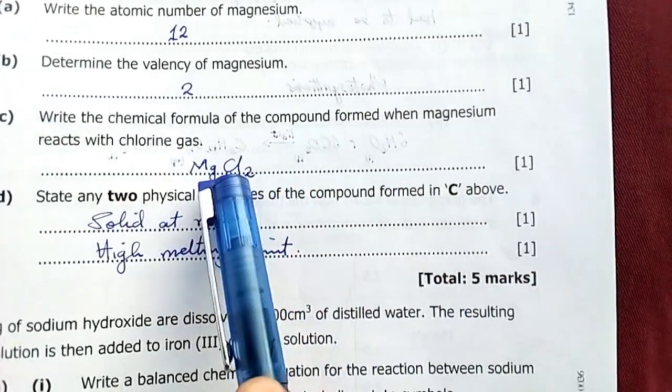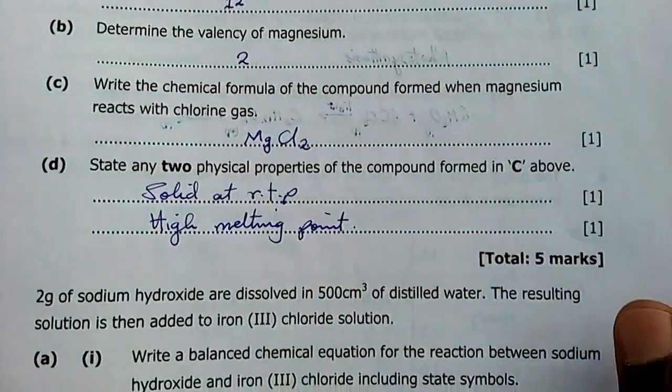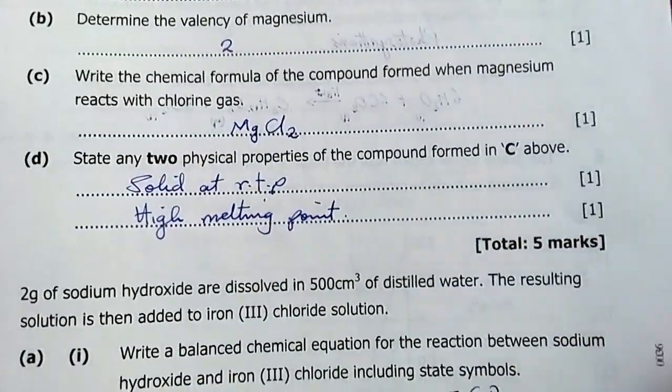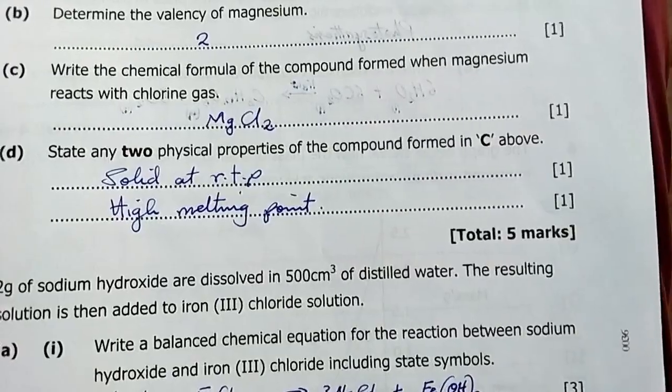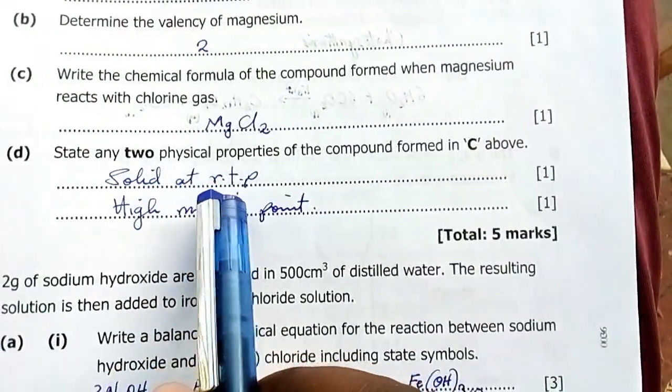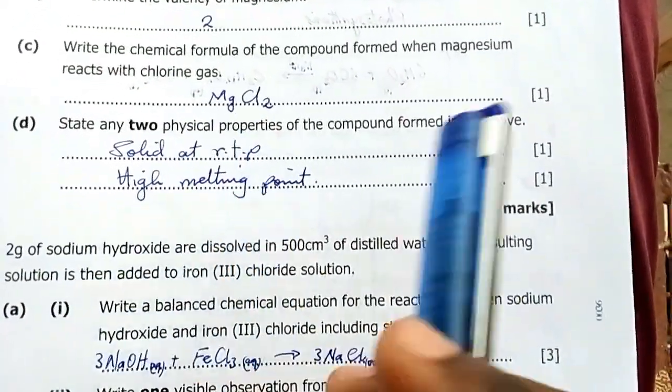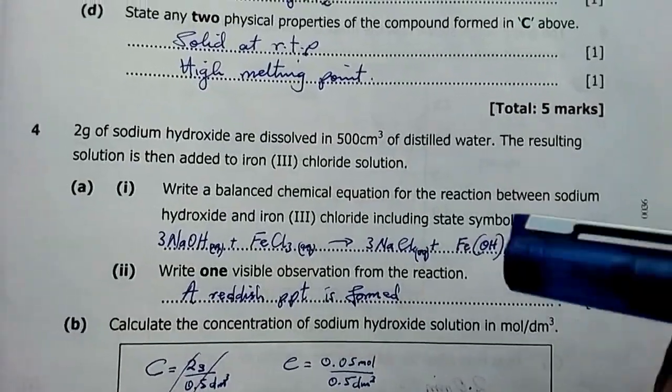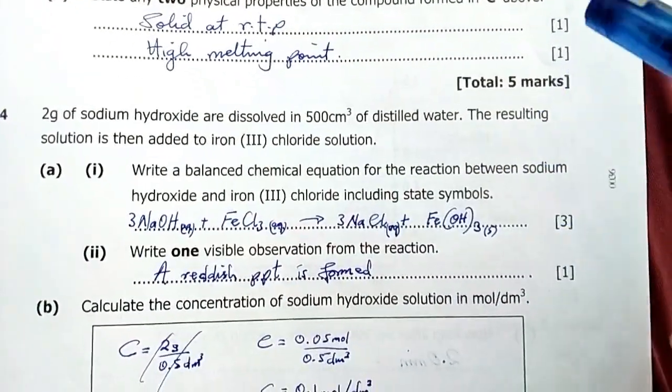Write the chemical formula of the compound formed when magnesium reacts with chlorine gas. That's magnesium chloride, MgCl2. State any two physical properties of the compound formed. It is solid at RTP, it's crystalline in nature, and has a high melting point.